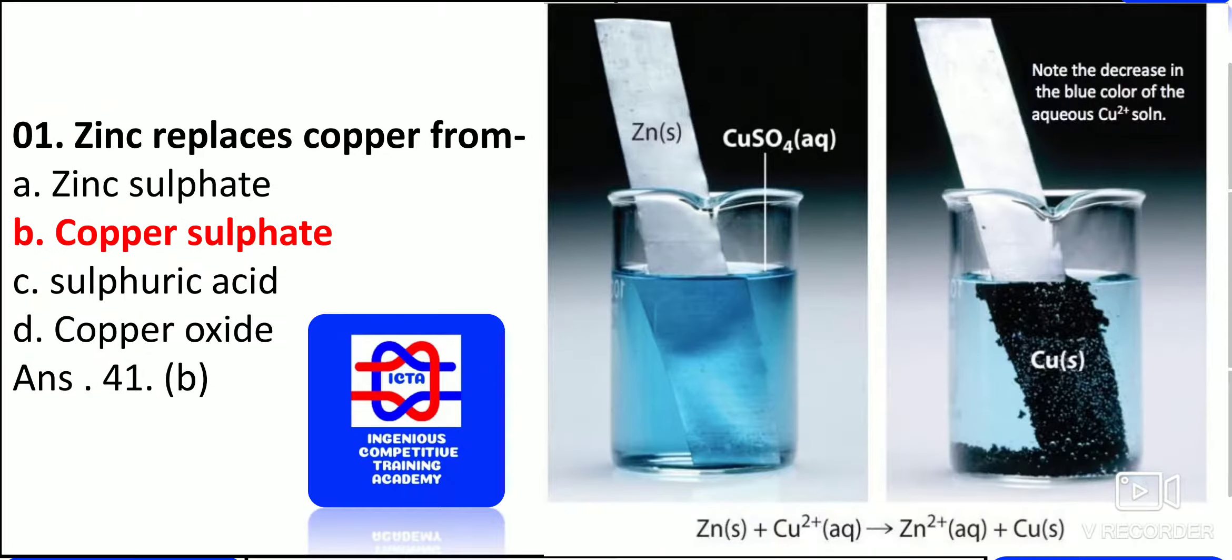As you can see to the right, zinc replaces copper from copper sulfate. This is one thing you have to remember. Once you put that zinc in that copper sulfate, the zinc is placed. As you can see how exactly it is, zinc replaces copper from copper sulfate. So here Zn(s) plus CuSO4(aq) forms as usual. The decrease in the blue color of the aqueous copper solution automatically gets affected.